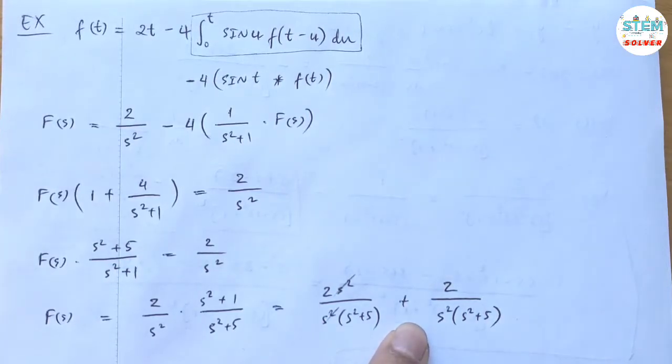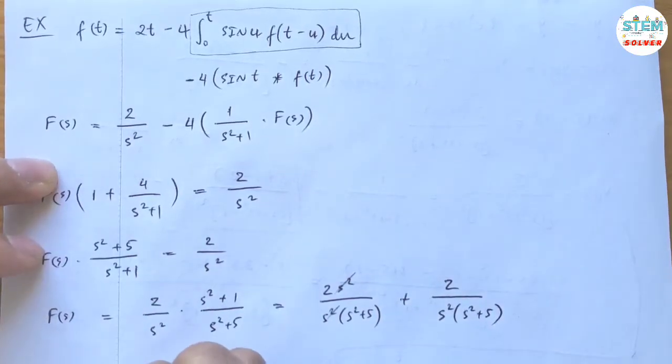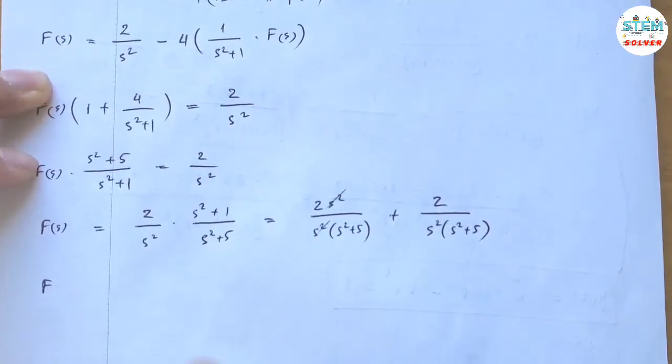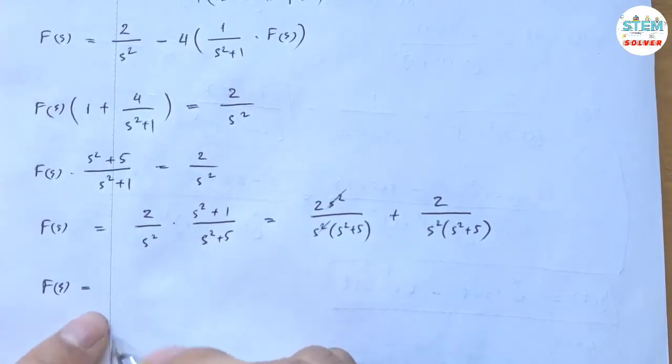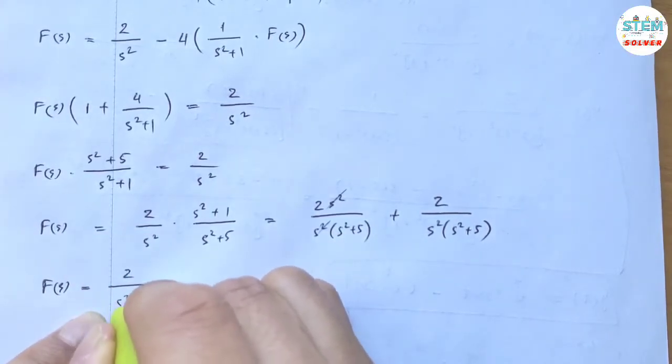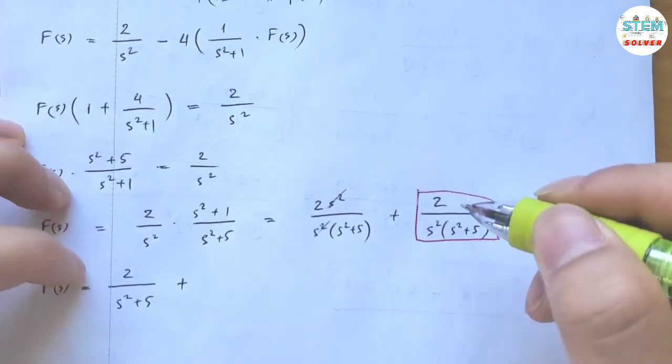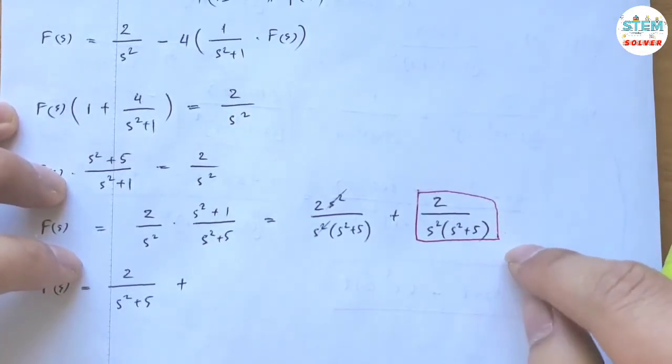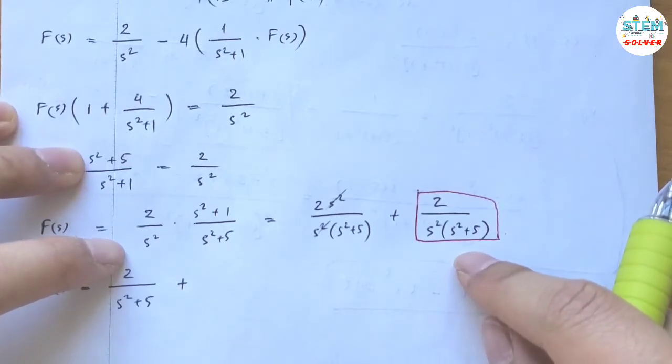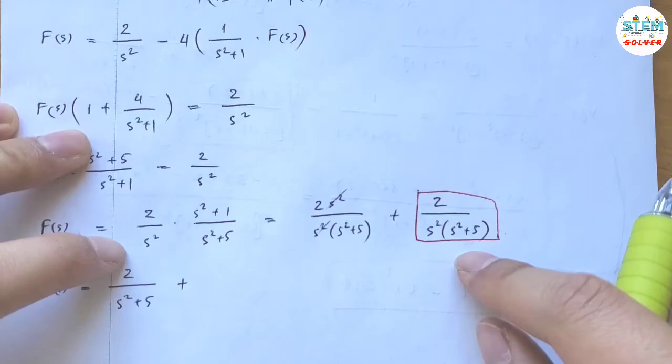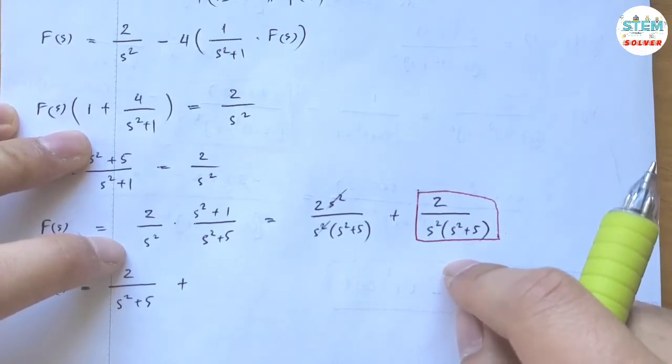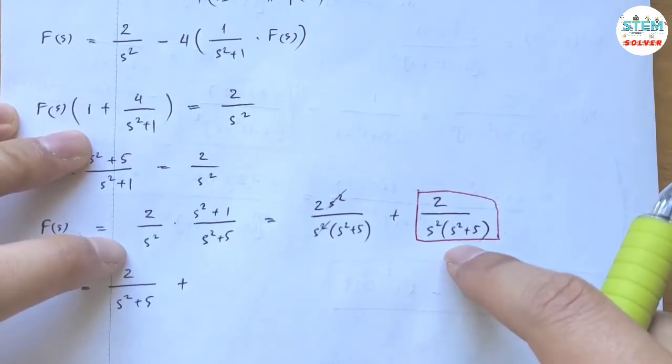And now for this one... Let me just rewrite it. So F(s) now is equal to 2 over this. Plus, for this one, if you want to use the decomposition method to rewrite it in smaller fractions, you could use that method. But what I'm going to do is use the shortcut because I want to keep everything simple.